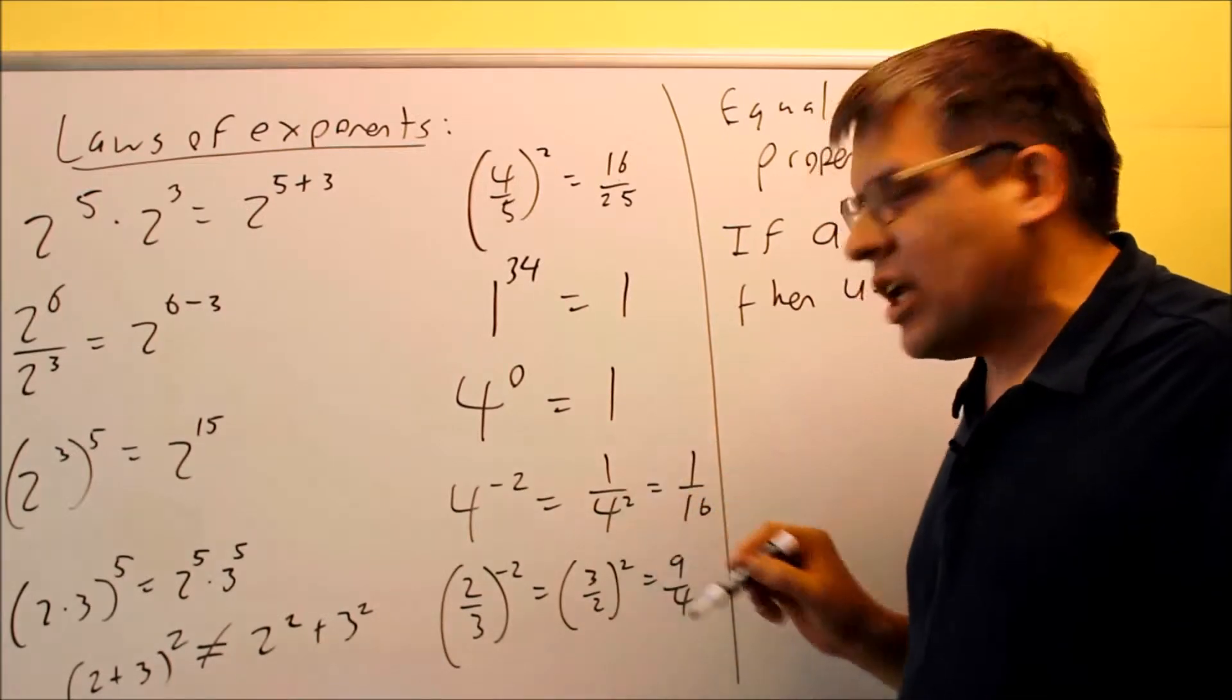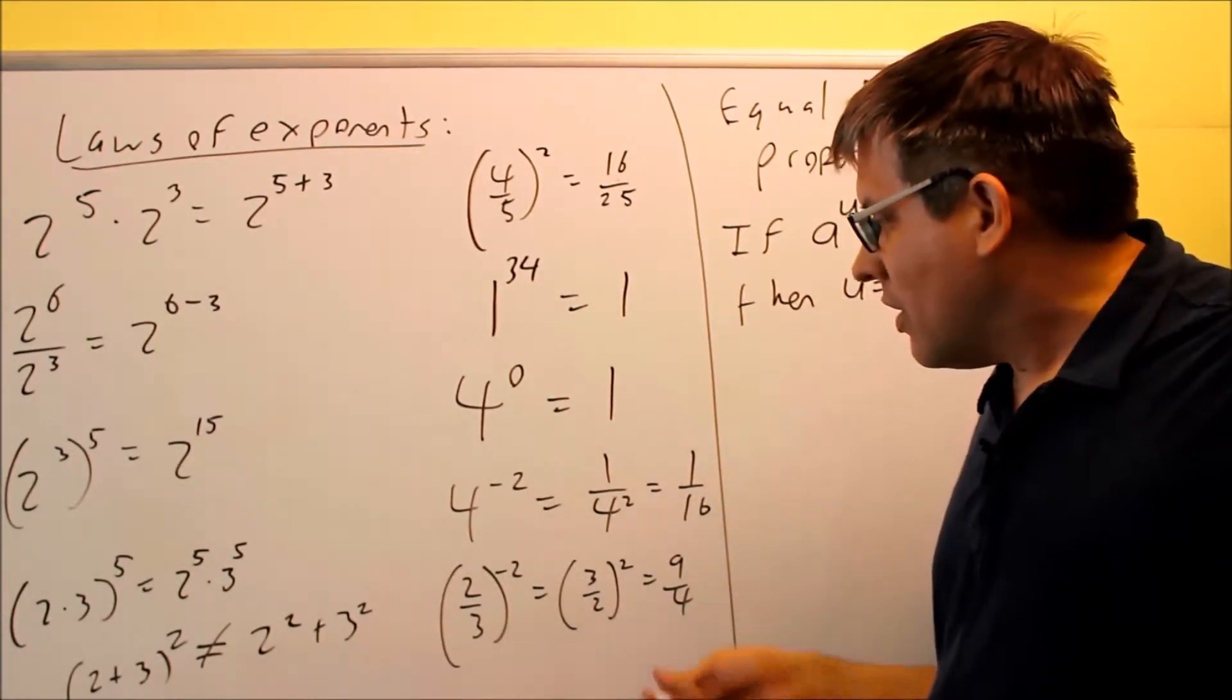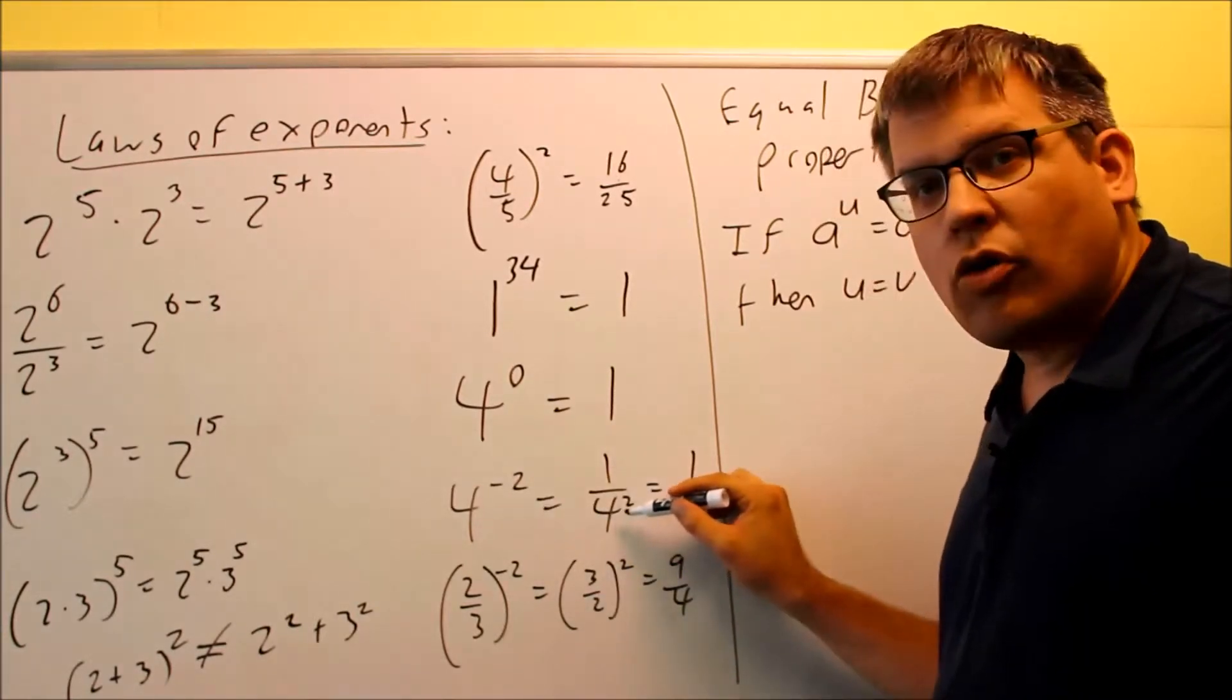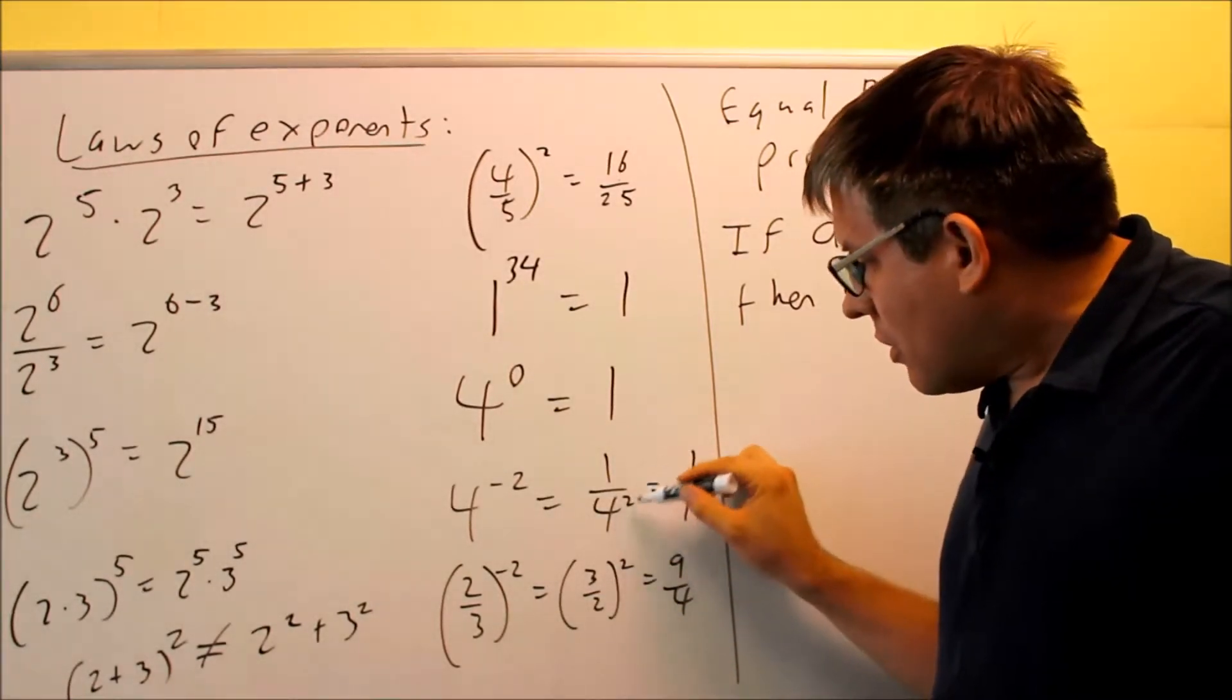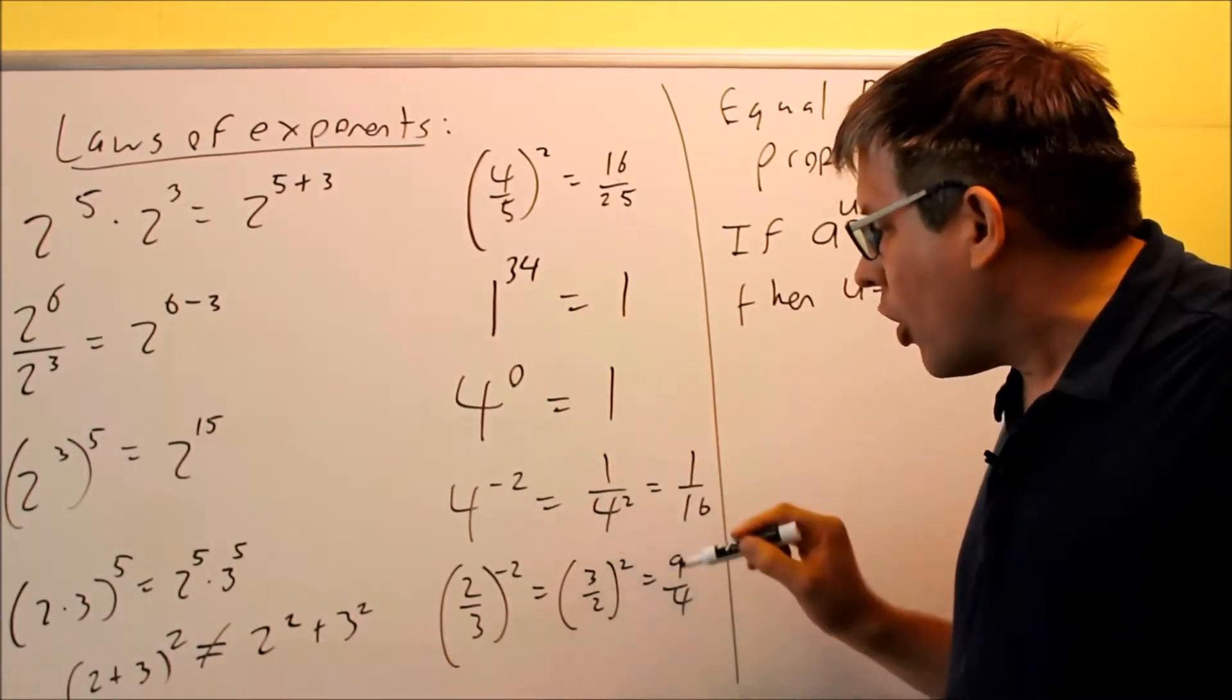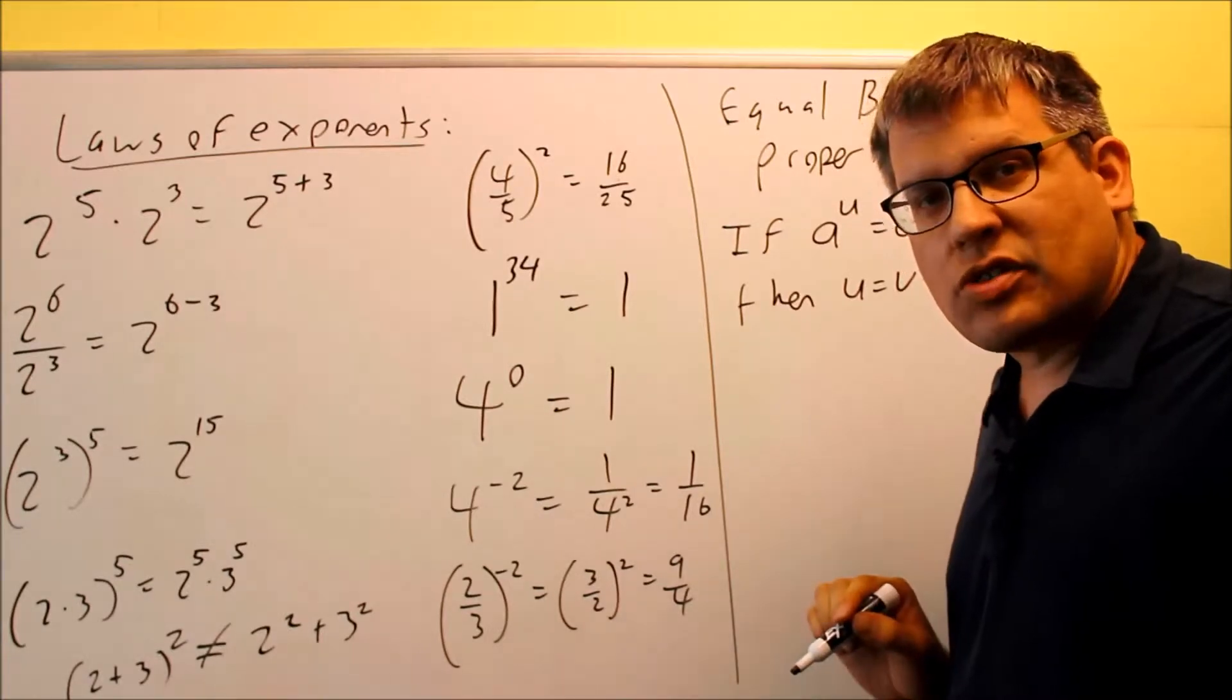For this, we have a couple rules that have to do with negative exponents. 4 raised to negative 2, that's the same thing. If I take that 4 and put it below the division bar, then that means that negative there becomes positive. So I get 1 over 4 squared, and that would be 1 over 16.